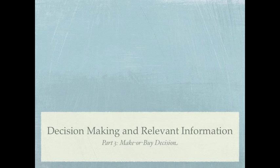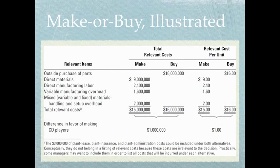This is part three in our decision-making and relevant information series, and we'll be discussing the make or buy decision. In this illustration, we're only looking at the relevant cost — whether we should make a product or buy it from someone else, or outsource it.